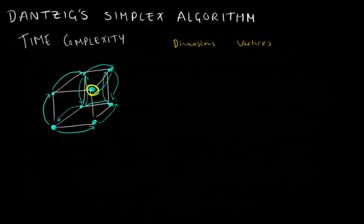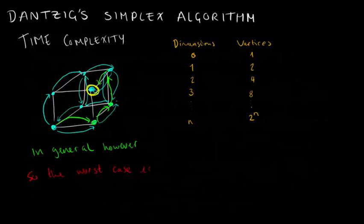Unfortunately, the number of vertices in an n-dimensional cube does not rise polynomially. In fact, there are O of 2 to the n vertices. So, in the worst case, if we were to traverse all of these vertices, that would take O of 2 to the n.